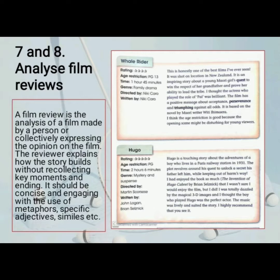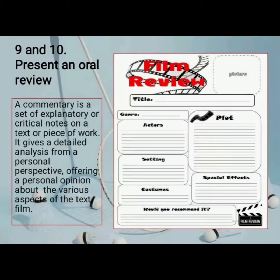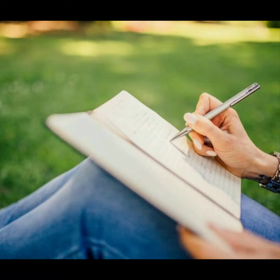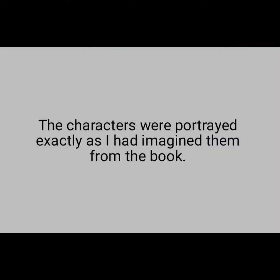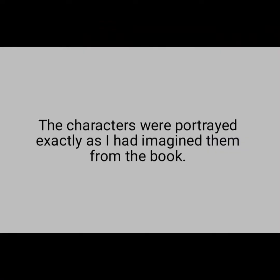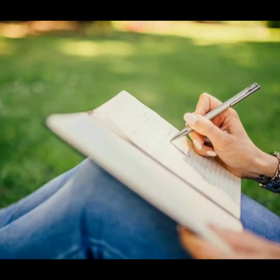The ninth and tenth topic: Present an Oral Review. Choose a film that you have seen or want to see — it can be one of the films mentioned in this unit. List the basic information about the film: the title, genre, age restriction, and time. Then make commentary notes, that is, a personal view of the film about the plot, the setting, the characters, and other aspects like the music. The commentary notes should express a personal opinion, for example: 'The characters were portrayed exactly as I had imagined them from the book.' Use persuasive techniques like powerful vocabulary, interesting facts, and a personal opinion.